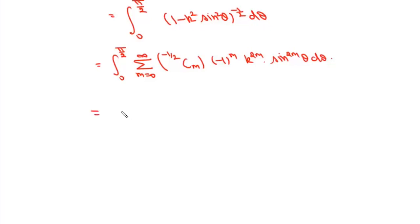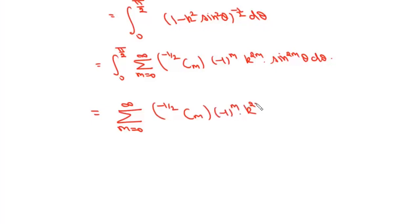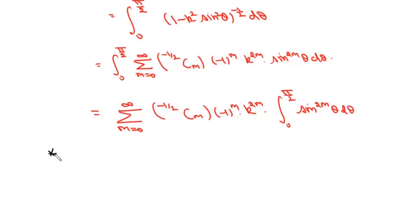We can write this as the summation where m varies from 0 to infinity of (-1/2 choose m) times (-1)^m times k^(2m) times the integral from 0 to pi/2 of sin^(2m)(theta) d-theta. We will first simplify the expression (-1/2 choose m) using the gamma function.